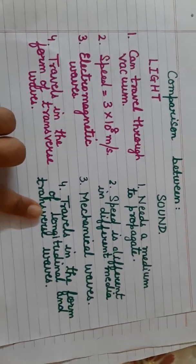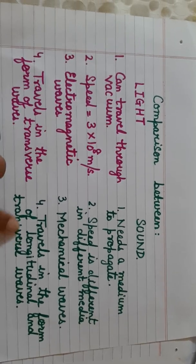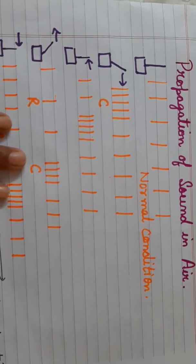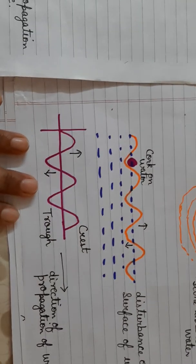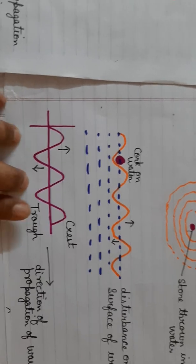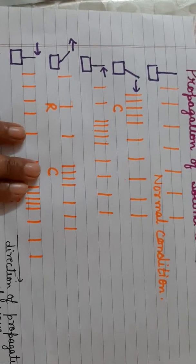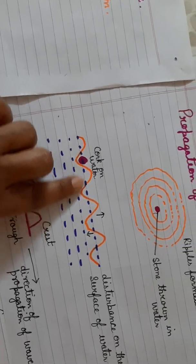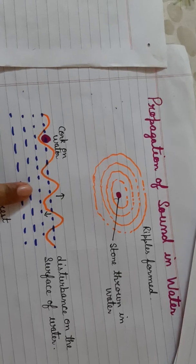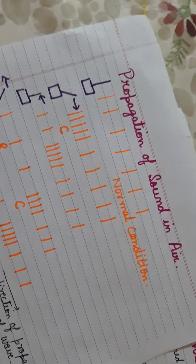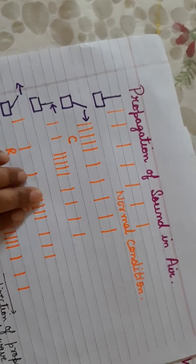Sound travels in the form of longitudinal and transverse waves. A longitudinal wave has alternate compressions and rarefactions, with particles moving parallel to the direction of propagation of the wave. In a transverse wave, particles move perpendicular to the direction of propagation. Remember: in solids and on the surface of liquids, sound travels in the form of transverse waves. While inside the liquids and through air, sound travels in the form of longitudinal waves.